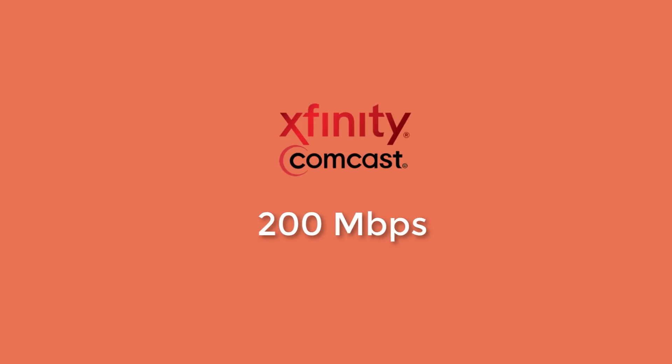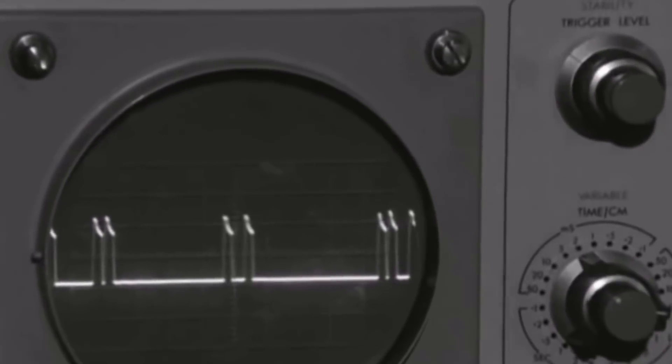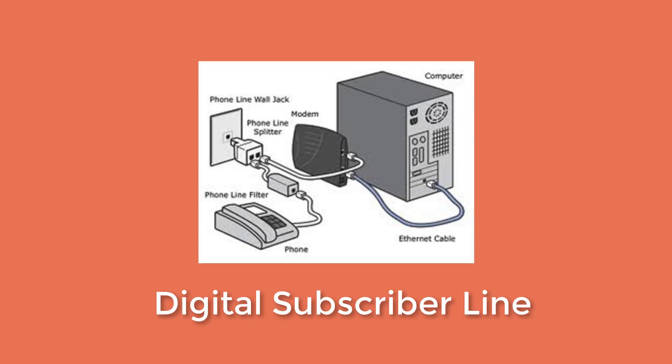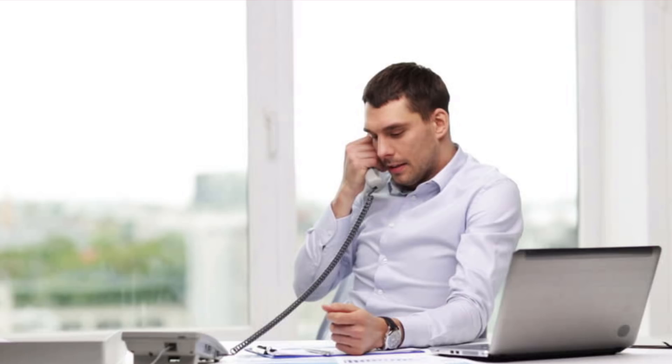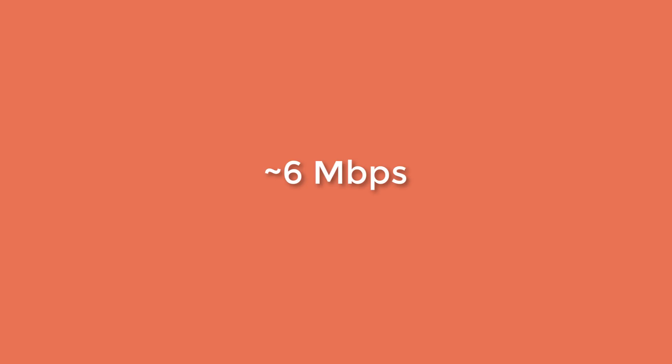Since dial-up used the same phone line for the internet and the home phone, this meant that you could either be on the phone or be on the web. Due to the limitations of the phone line, ISPs switched to a digital subscriber line — DSL — which essentially sends data on a different frequency, allowing you to get online and be on the phone simultaneously. This made the internet way faster, up to 6 megabits per second.